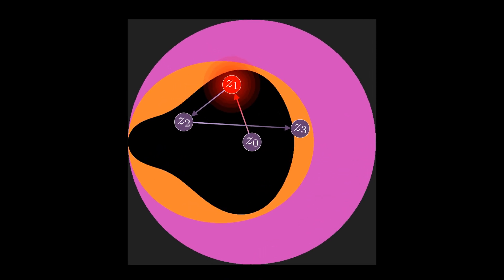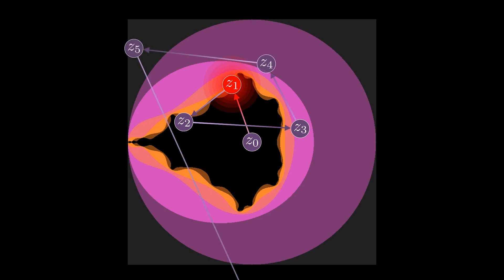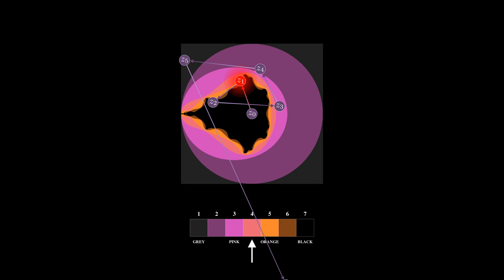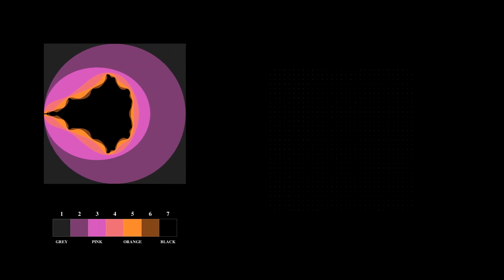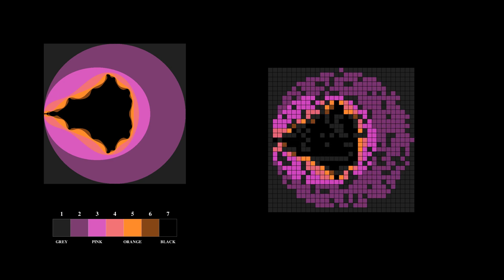The shape of the set changes if we use more iterations. Using seven iterations, for each point C we calculate the sequence from Z₀ to Z₆. Since we don't have seven colors, interpolation computes one color between gray and pink, one between pink and orange, and another between orange and black. In this example, the sequence escapes the disk after Z₅, so we select the color at position 5 in our palette — which is orange — and assign it to the corresponding pixel. To produce a complete richly colored plot, one must apply this procedure to every pixel in the image.